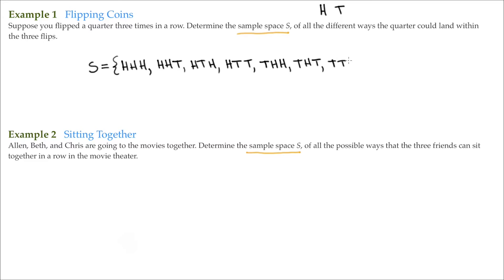I can get two tails and then a head. And I think we got one more, and that is all three come up tails. I think we got them all, so I close off my set with a curly brace. The good thing about a sample space is you can see all the outcomes — that helps us visualize what's going on. And here we have one, two, three, four, five, six, seven, eight possible outcomes when flipping a quarter three times.